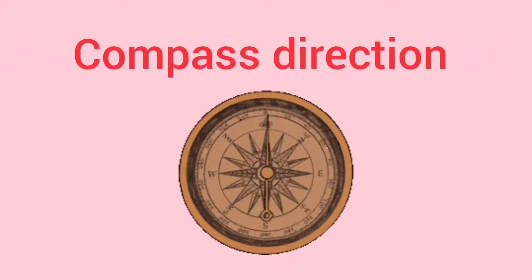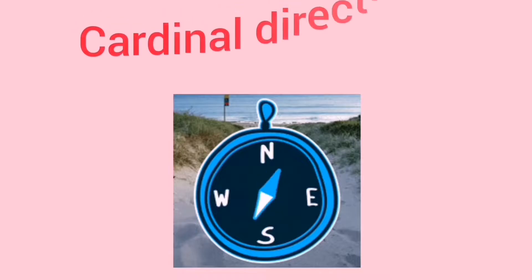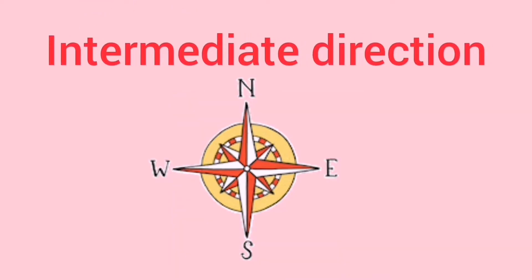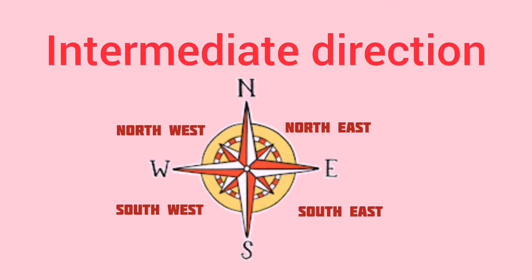Next topic is compass direction. We are going to learn how to find the compass direction of one place from another place. We know there are four cardinal directions: north, south, east, and west. In between these we have intermediate directions — between north and east we have northeast, between south and east we have southeast, between south and west we have southwest. Now notice I have started everything with either north or south — you should not start with east or west. There is no direction called east north or west north; it should be northeast, northwest, southeast, or southwest.